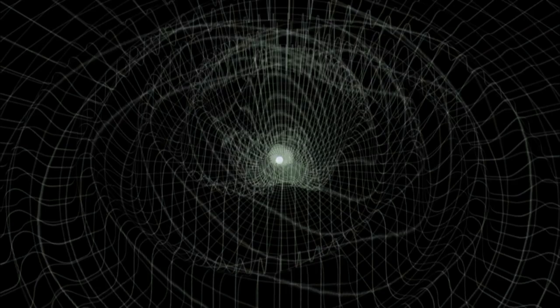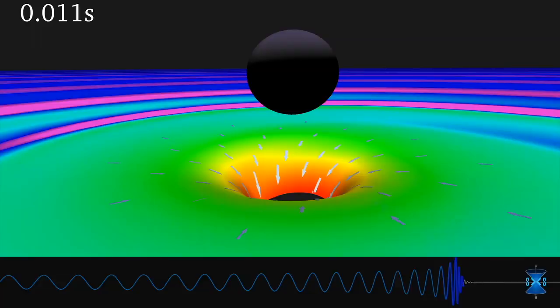When two black holes collide, they form one larger black hole that rings down as it settles. This is similar to a bell after it has been struck.